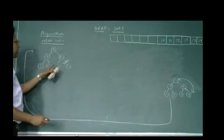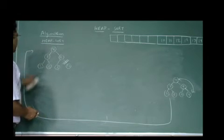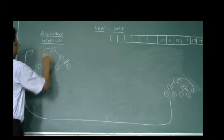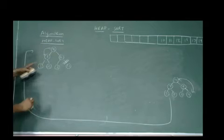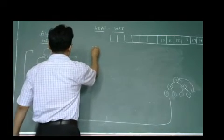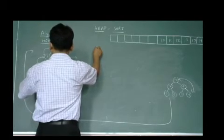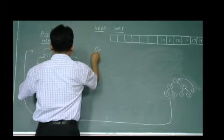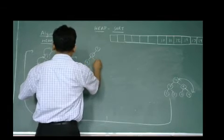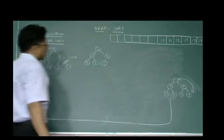After heapifying: 7 is greater than 4 and 6, so swapping takes place. Then 4 is smaller than 5, so swapping takes place again. After these swaps the heap converts to: 7, 5, 6, 4, 2, 3.